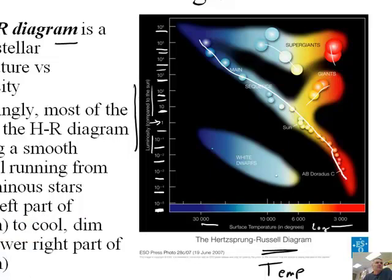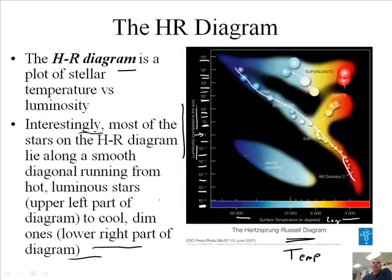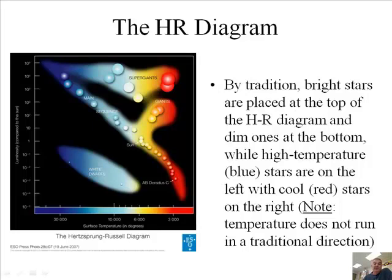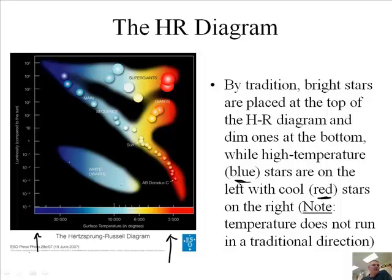Most of the stars on the HR diagram lie along a smooth diagonal curve from the hot, bright upper left part of the diagram to the cool, dim lower right. They just plotted all the stars and found a pattern. By tradition, the bright stars are placed at the top and the dim ones at the bottom — it could have been done the reverse, but they chose this way. The high temperature stars are the blue ones and the cool ones are the red ones. This axis goes from 3,000 degrees Kelvin on the right up to 30,000–40,000 Kelvin on the left. So the hot ones are on the left and the cold ones on the right, and the bright ones on top.